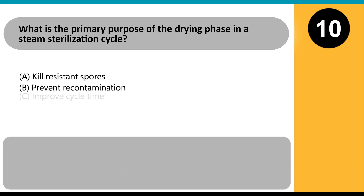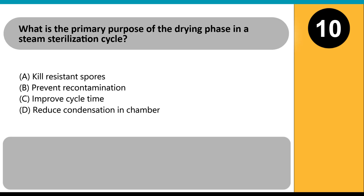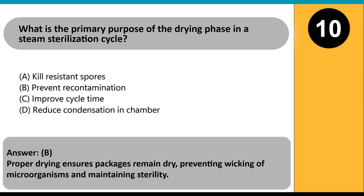What is the primary purpose of the drying phase in a steam sterilization cycle? A. Kill resistant spores. B. Prevent recontamination. C. Improve cycle time. D. Reduce condensation in chamber. Answer: B. Proper drying ensures packages remain dry, preventing wicking of microorganisms and maintaining sterility.